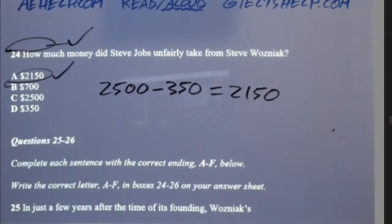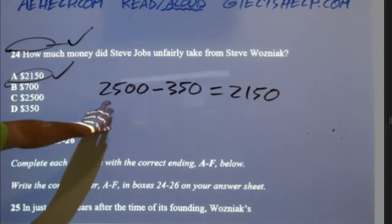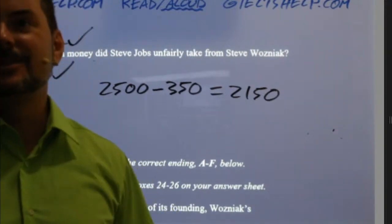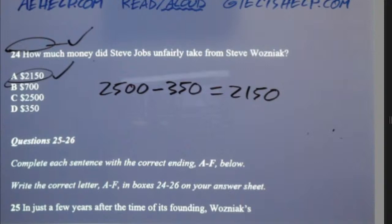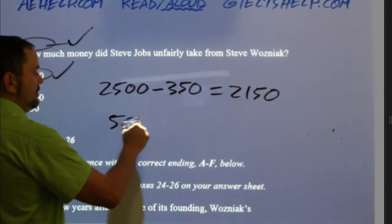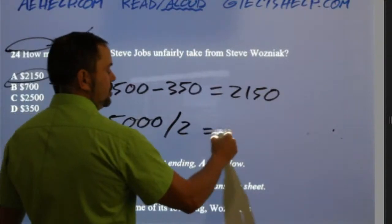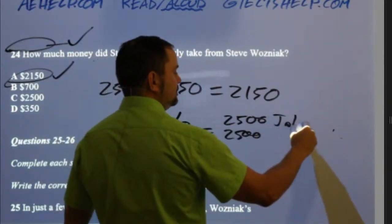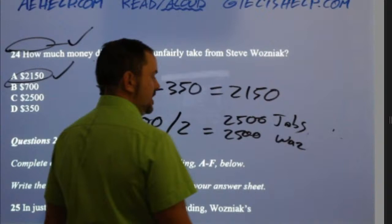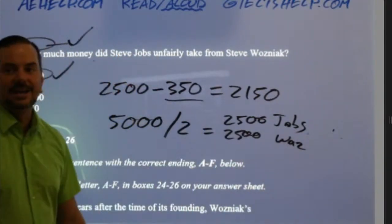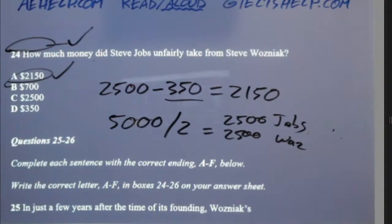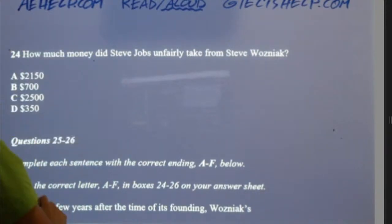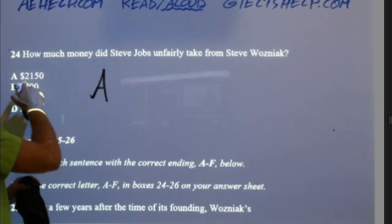Sometimes in the listening and in the reading section, you have to do this kind of simple math question. The company paid $5,000, split between two people — each should have gotten $2,500. But Jobs only gave Woz $350 and lied about the rest. So the answer is A. Make sure that on the answer sheet you write A, not $2,150.